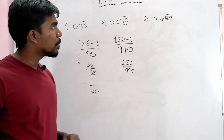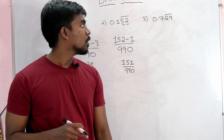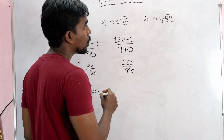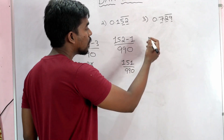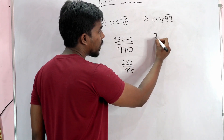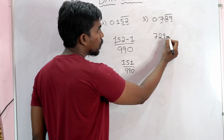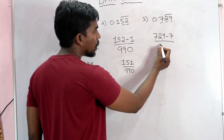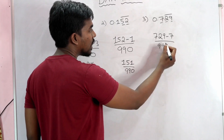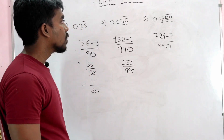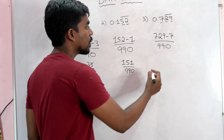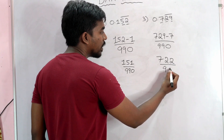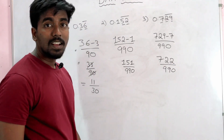We solved this problem. You can try the third problem. Let's start: 0.729 bar. Here, 729 — what is minus? 7 minus — in minus 1 divided by 2 digits, there are 2 digits. Here 1 digit. So what is 729 minus 7? That gives 722 divided by 990. This is the answer.